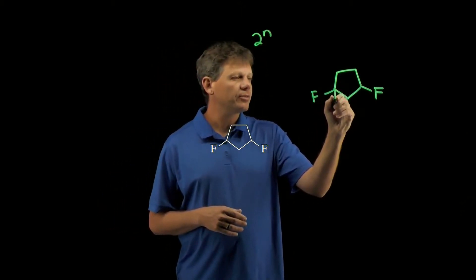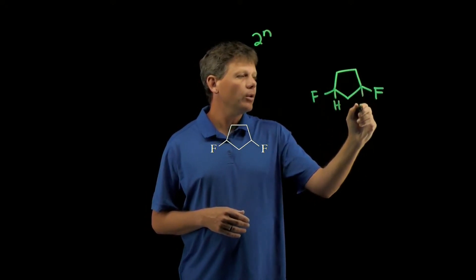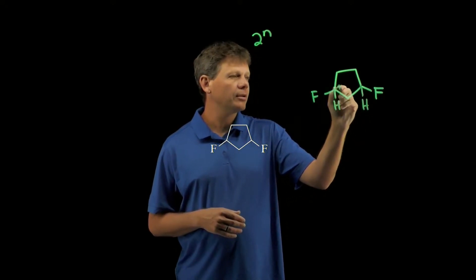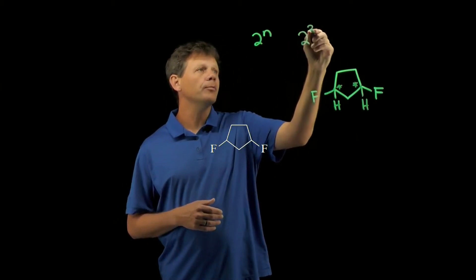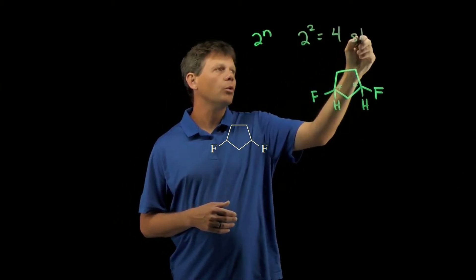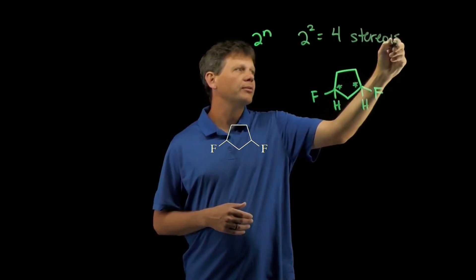If we draw on the hydrogens on these two carbons, we notice that this molecule has two stereocenters. So 2 to the 2 would suggest that there are four possible stereoisomers.